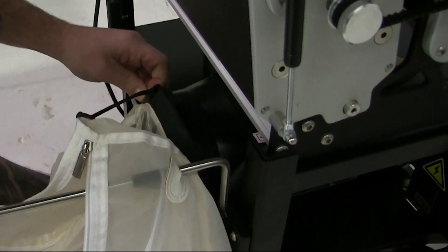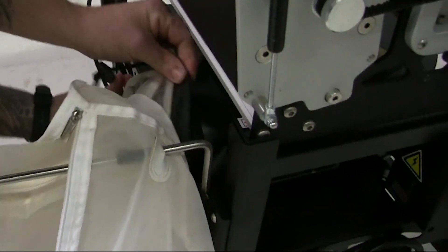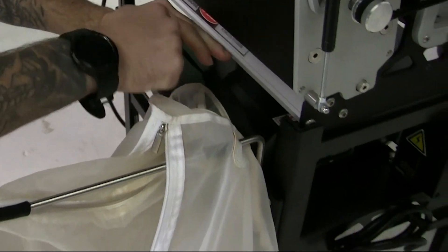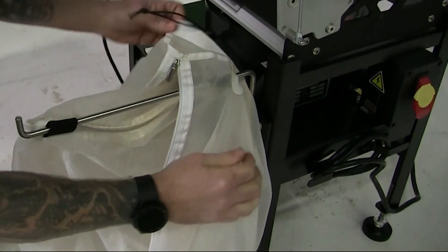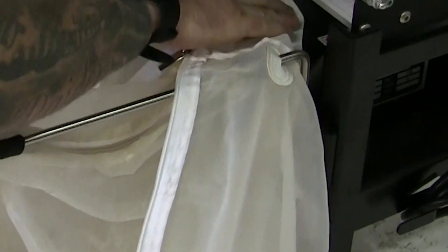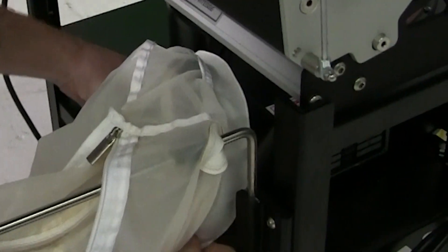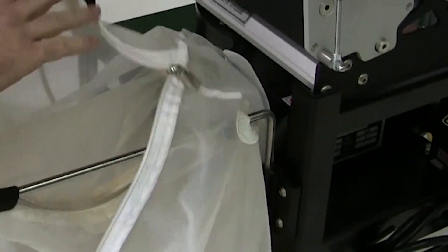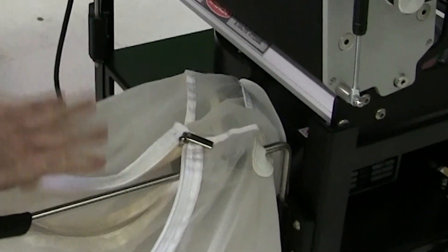Tighten up on that, put this one over this. Real important because it's got to catch the kief. Bottom bag's catching the leaf, top bag's catching the kief when you're doing dry trimming.